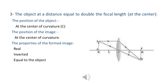When the object is at a distance equal to double the focal length, it means the object is at the center. The position of the image is also at the center. The properties of the image: real, inverted, and equal in size to the object.